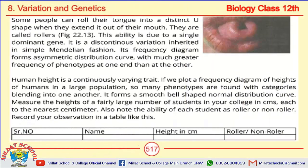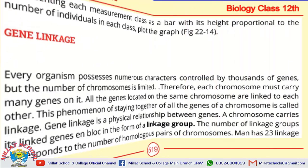Quantitative traits are continuously varying traits — for example, human height is continuously varying. Qualitative traits are discontinuously varying traits. You must remember the clear difference between them.